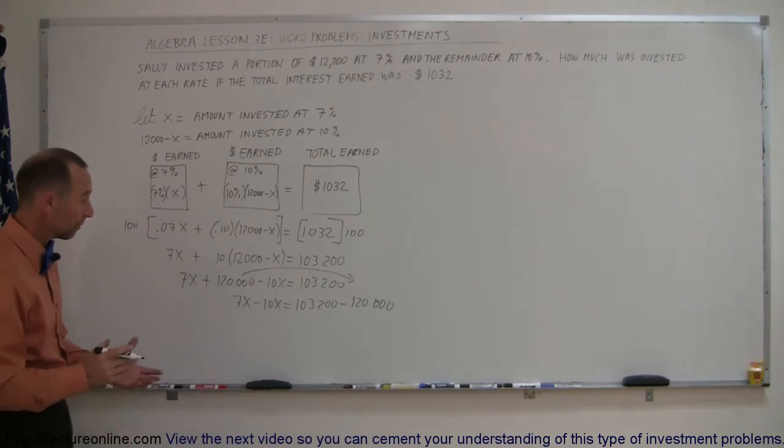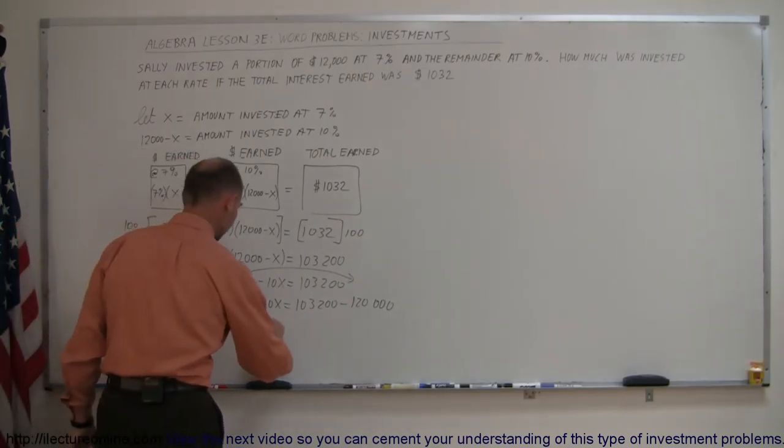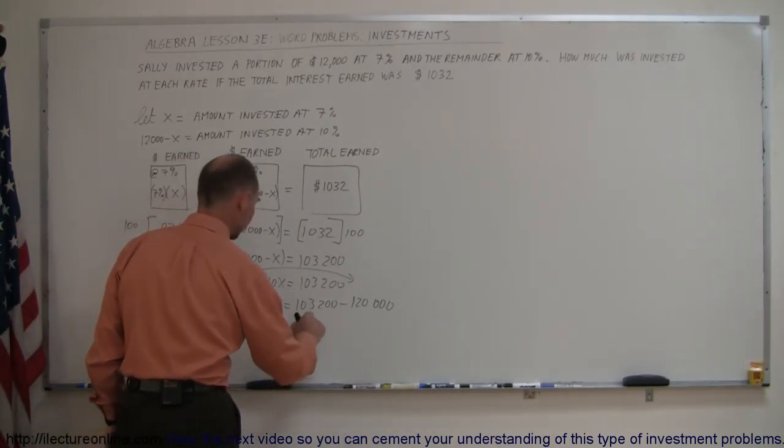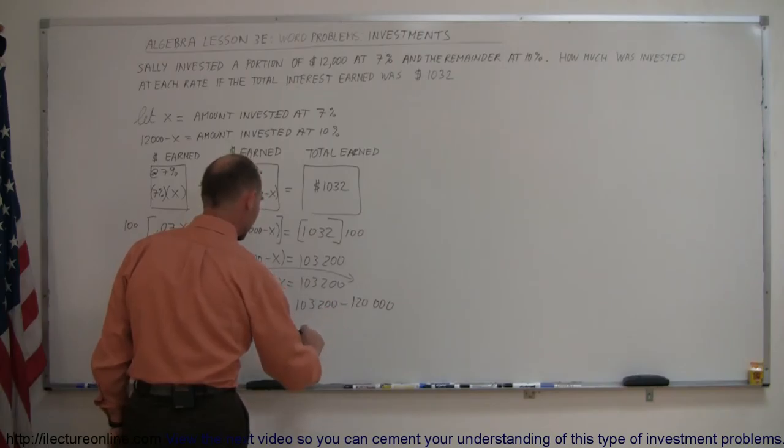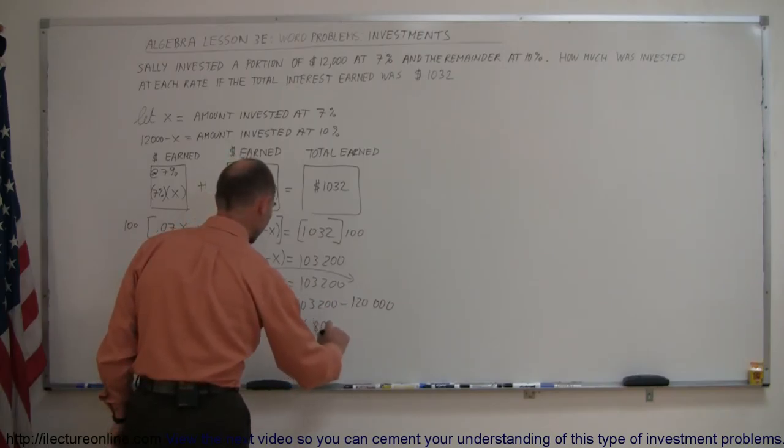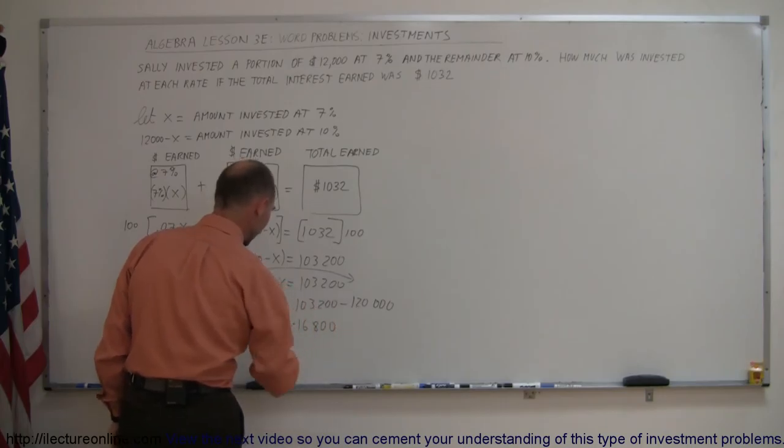Next we combine like terms. This is minus 3x on the left side, equals this minus this, which would be negative 16,800.